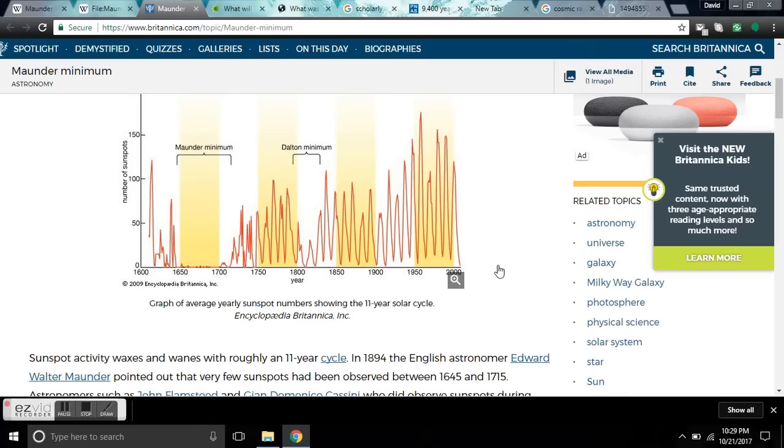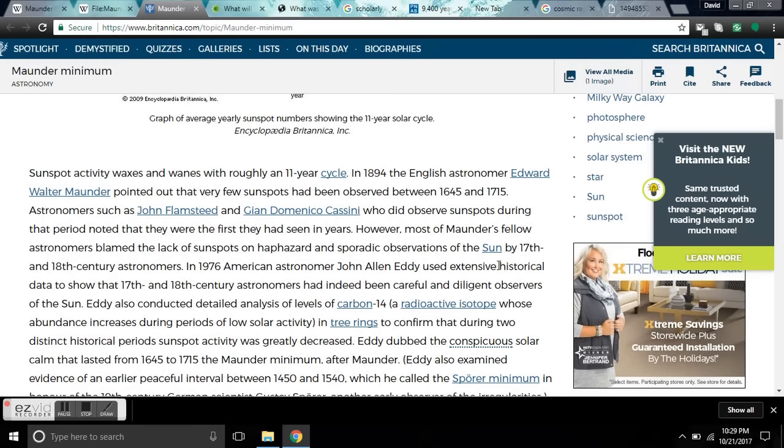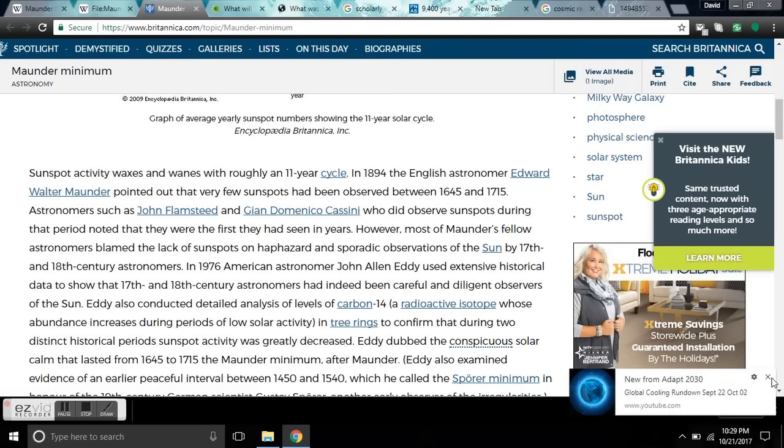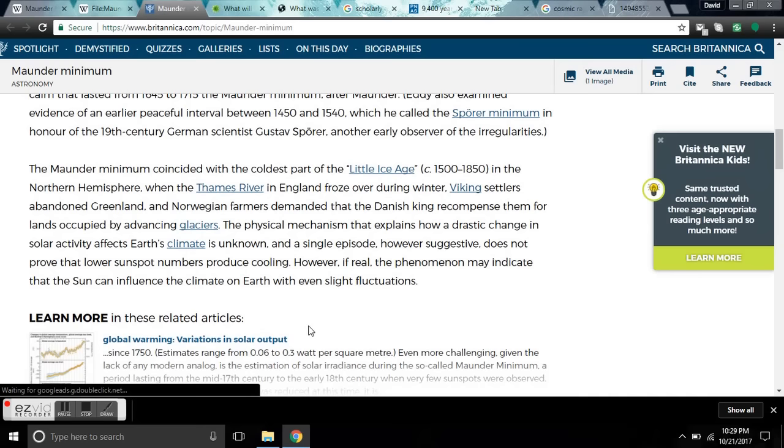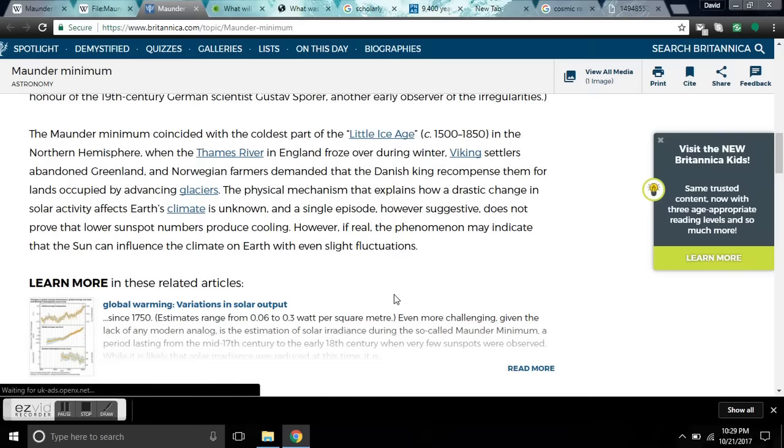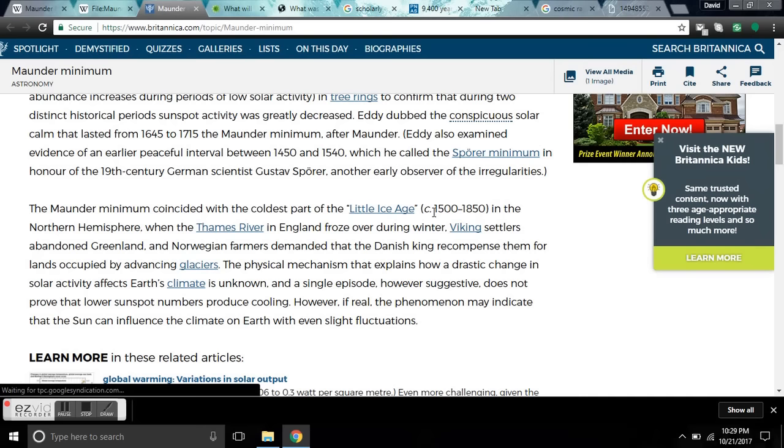Now, the Maunder Minimum sunspot activity waxes and wanes with a roughly 11-year cycle, the solar cycle, and it changes between around 9½ years to 11 plus years. In 1894, the English astronomer Edward Walter Maunder pointed out that very few sunspots had been observed between 1645 and 1715. The Maunder Minimum coincided with the coldest part of the Little Ice Age. The Little Ice Age is a very long period of time. It's an entire almost 400-year cycle of cold.